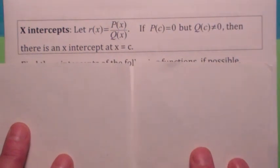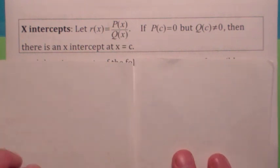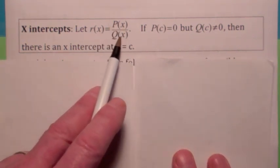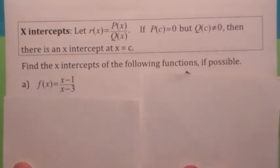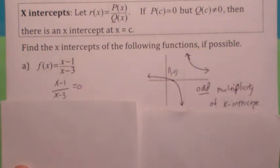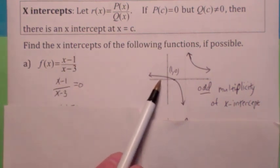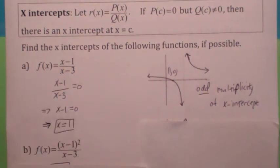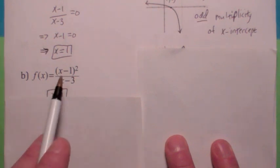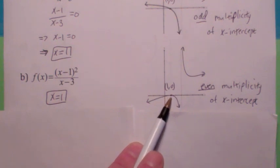X-intercepts occur where the numerator is zero but the denominator is not — a value of x that makes the fraction zero. When is a fraction zero? When the numerator is zero. Just like with polynomial functions: if the x-intercept has odd multiplicity — say multiplicity 1 — the graph crosses the x-axis there. If the x-intercept has even multiplicity, it's going to be a turning point. It works the same way as with polynomial functions.